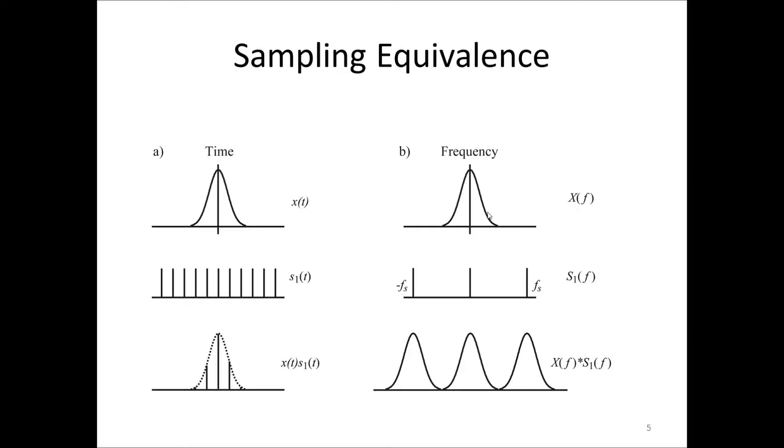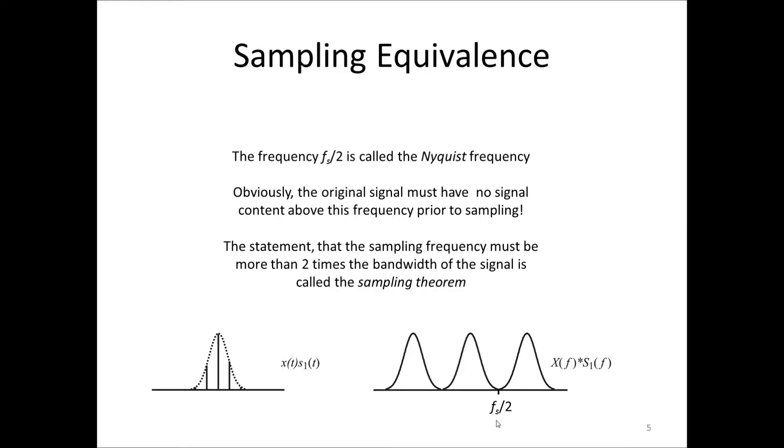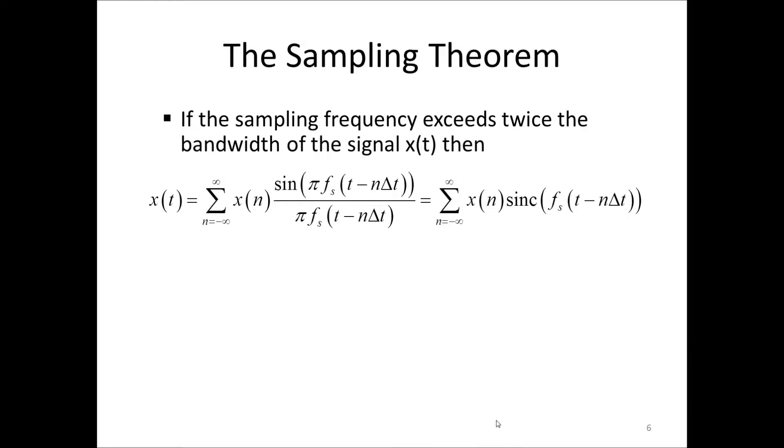This obviously leads to a dilemma. The frequency, fs half, is a crucial frequency. It is called the Nyquist frequency. And obviously, the original signal must have no signal content above this frequency prior to sampling. Otherwise, the frequency spectrum will not be the same between zero and the Nyquist frequency before and after sampling. Furthermore, the statement that the sampling frequency must then be more than two times the bandwidth of the signal, is called the sampling theorem. So, this is an illustration of why it's important to fulfill the sampling theorem. And the sampling theorem states that we need to sample the signal more than twice the bandwidth of the signal.